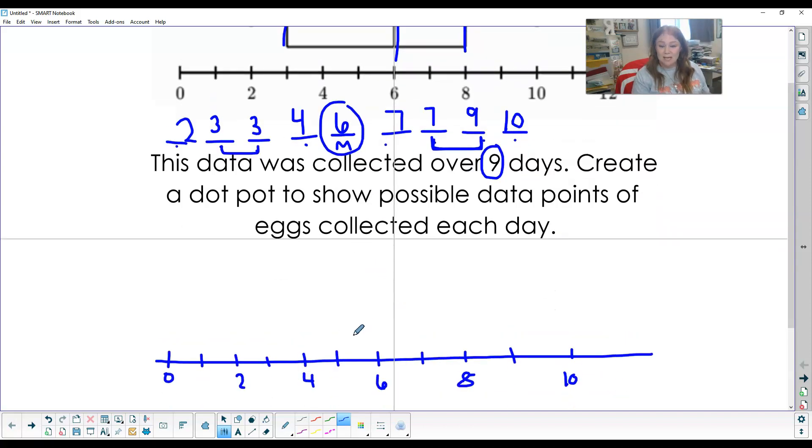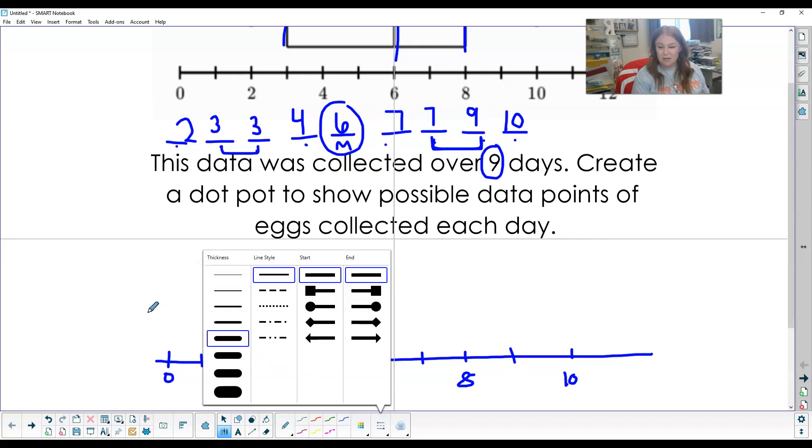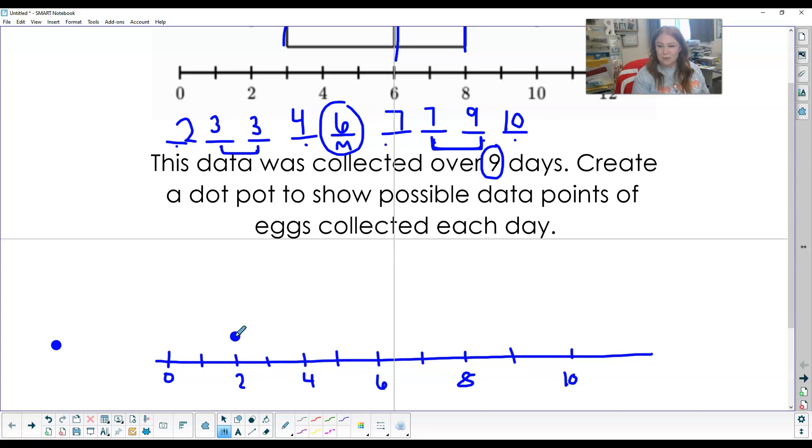I'd come put it on my dot plot. So I've got a two, I've got two threes, a four, a six, two sevens, a nine, and a ten.